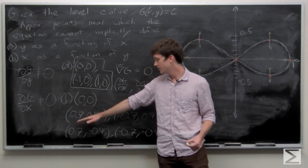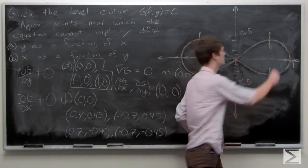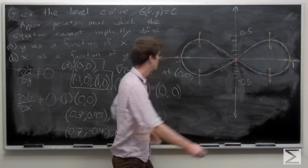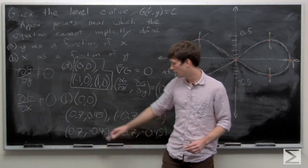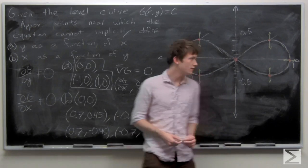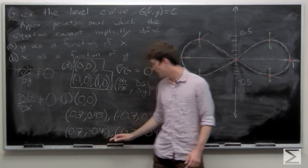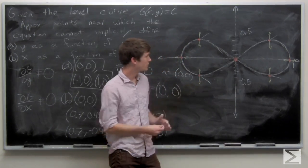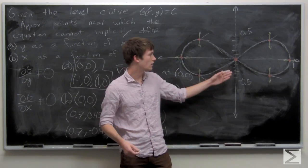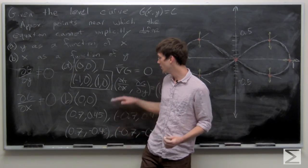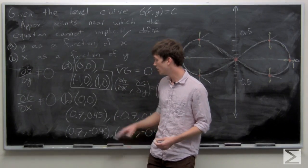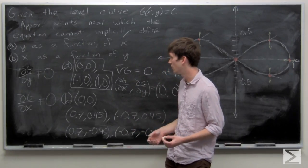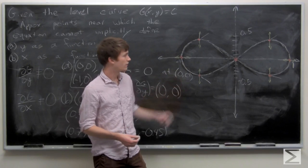So we have four estimated points: (0.7, 0.45), (-0.7, 0.45), (0.7, -0.45), and (-0.7, -0.45). These four points have no x component in their gradient but have a y component. Then we have the origin (0,0) which has no x or y component. And we have two points at approximately (-1, 0) and (1, 0) where there is no y component but there is an x component.